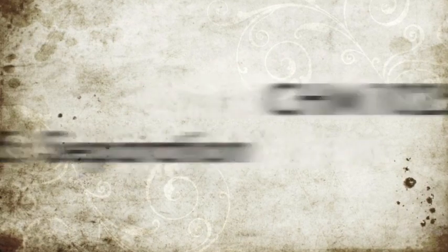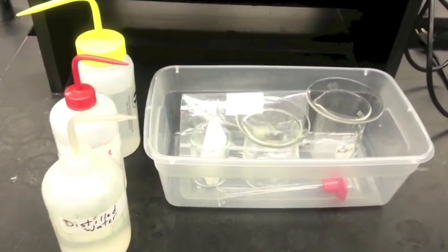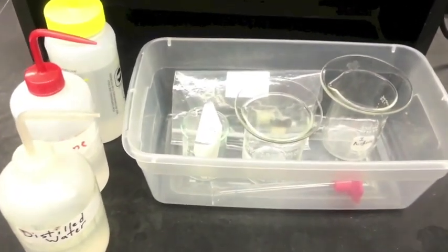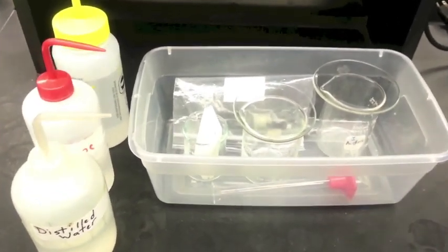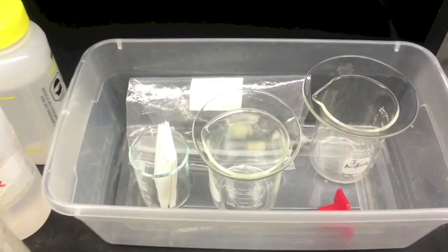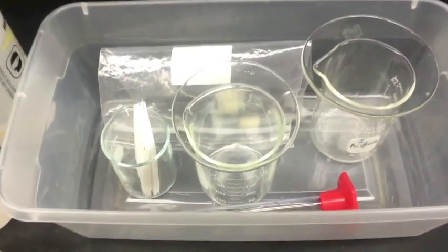In the lab setup, you get the tray that contains everything you need to complete the task. That includes the beakers, the solvents, the reference paper, the pens, and the graduated cylinder.